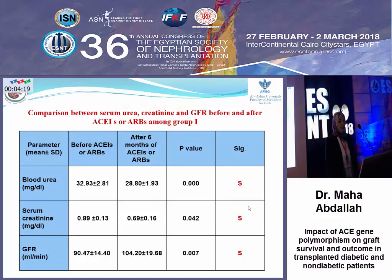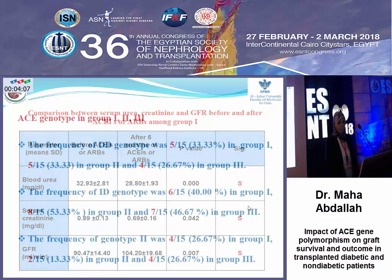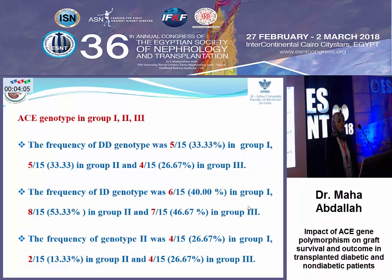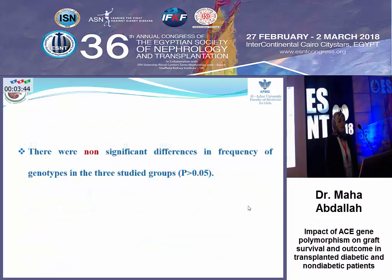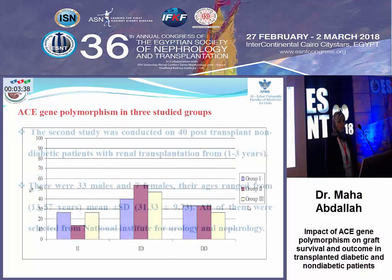Our research shows a significant decrease in blood urea and serum creatinine, and an increase in GFR, in Group 1 — normal graft function — after six months of receiving ACE inhibitors or ARBs. Regarding ACE genotype in the three groups, the frequency of the DD genotype was 5 in Group 1, 5 in Group 2, and 4 in Group 3. The frequency of the ID genotype was 6 in Group 1, 8 in Group 2, and 7 in Group 3. There were non-significant differences in genotype frequencies among the three studied groups, as seen in the diagram.